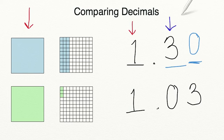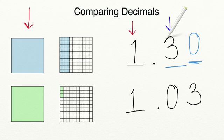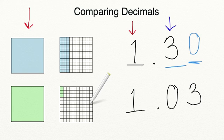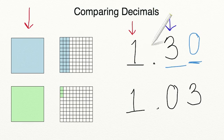Now we need to compare which has a larger value in the tenths place, since our ones place had the same value. As you can see, we have a three in the tenths place for our number in blue and a zero in the tenths place for our number in green. We can also see that with our visual, because we have three full tenths shaded in, whereas in our green number, we don't even have one full tenth shaded in. That means that one and three tenths is our larger number.